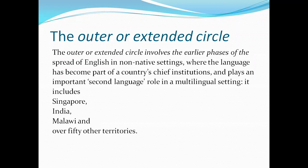In the outer or extended circle, the countries included are those where English language is used as the second language — a definition we have learned in our previous classes. These countries include Singapore, India, Malaysia, and over 50 other territories. This is called the outer circle or extended circle.